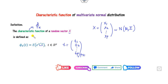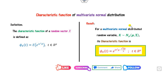Based on this definition we can define the characteristic function of the multivariate normal distribution. The first result is: if you have the multivariate normal distribution X, the characteristic function is defined in this manner, where mu is the mean vector and Sigma is the covariance matrix. Let me now prove this result.